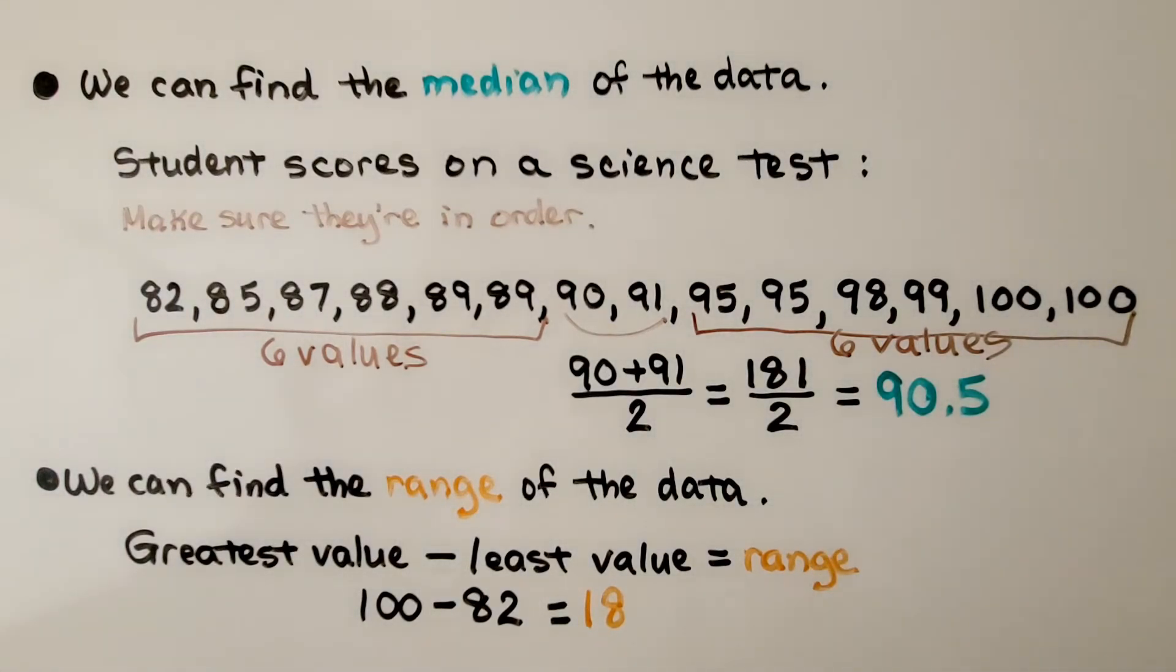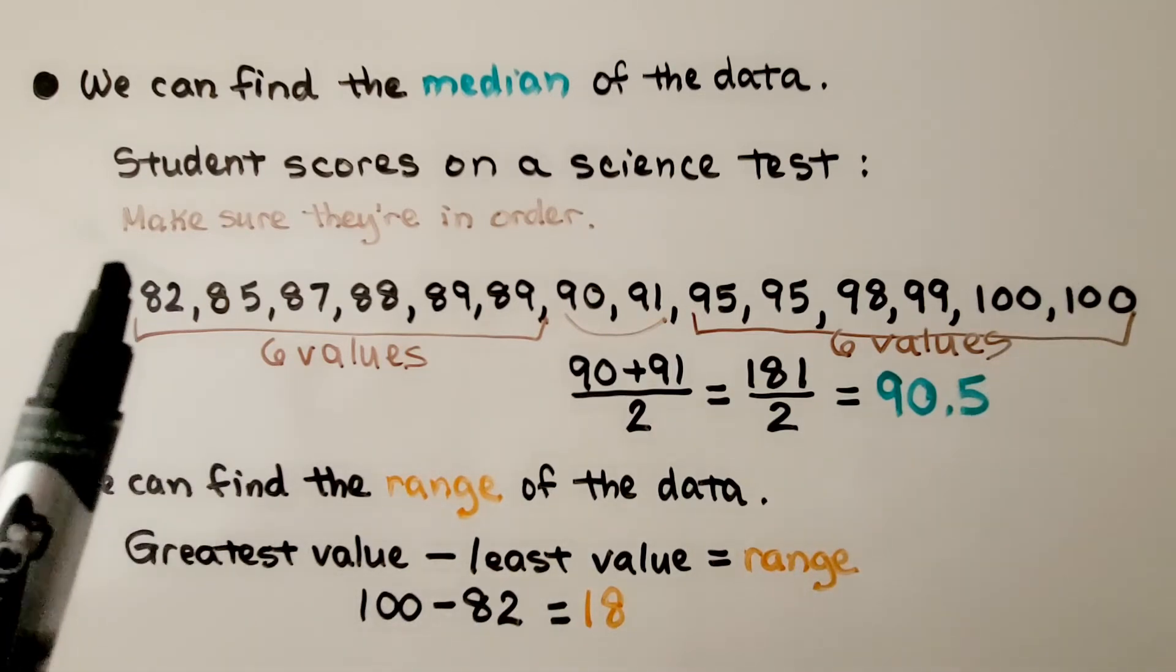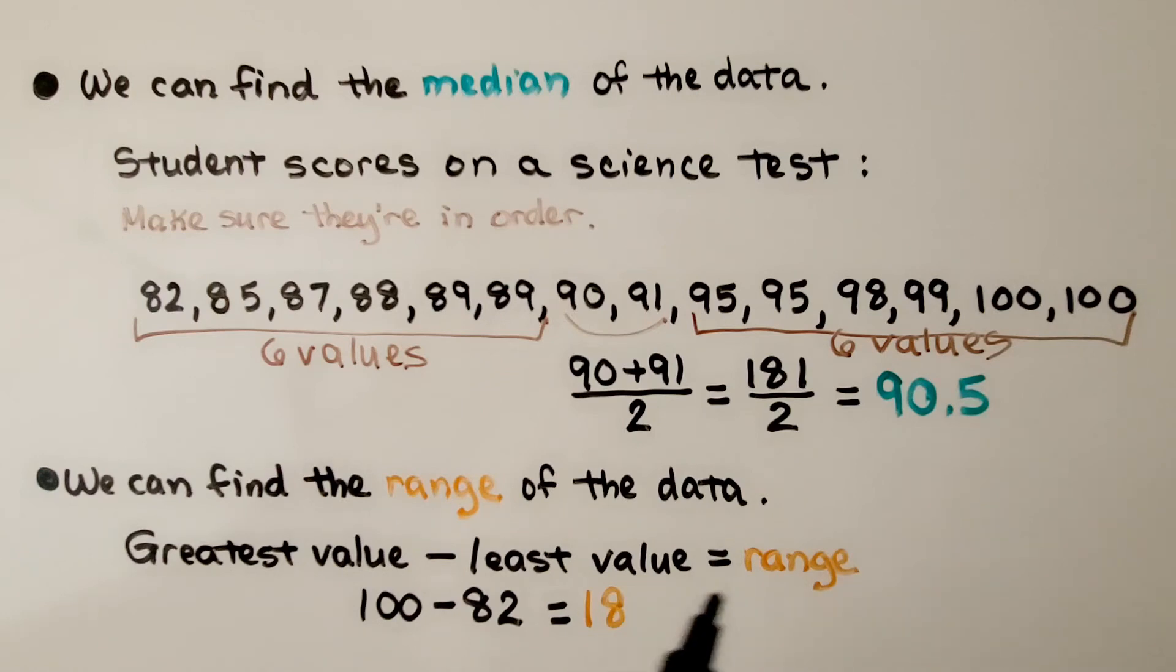We can find the range of the data. We do the greatest value minus the least value. We're going to do 100 minus 82. We get 18 for our range.